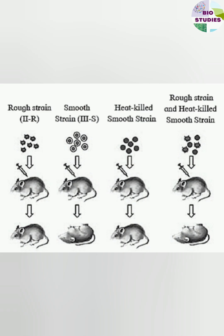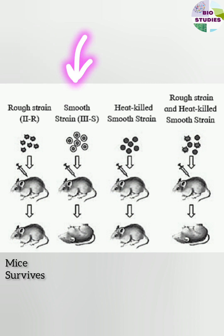The experiment is such that first the rough strain is injected into the mice and the mice survive. Then the smooth strain is injected into the mice and the mice died.